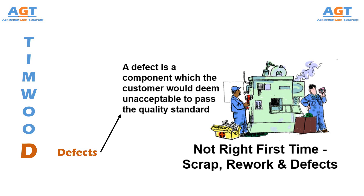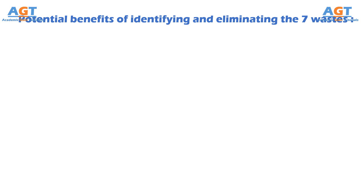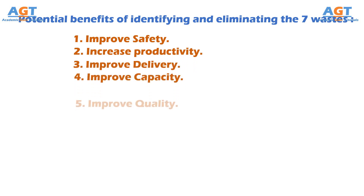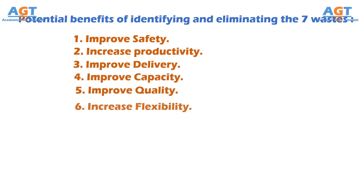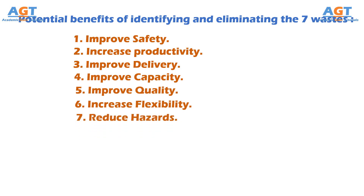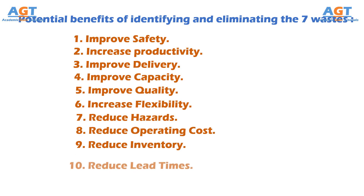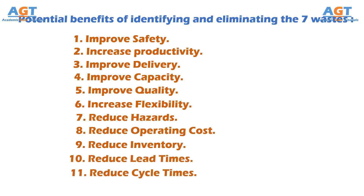So these are the 7 wastes of lean manufacturing that need to be identified and eliminated so that we can gain the potential benefits, like improved safety, increased productivity, improved delivery, improved capacity, improved quality, increased flexibility, reduced hazards, reduced operating costs, reduced inventory, reduced lead time, and reduced cycle times.